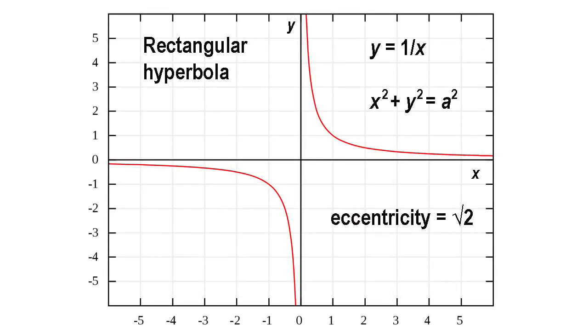A rectangular hyperbola has an eccentricity of root 2, asymptotes that are mutually perpendicular, and the property that when stretched along one or both of its asymptotes it remains unchanged. The standard equation of the rectangular hyperbola is x squared plus y squared equals a squared, where a is half of the distance between the foci.